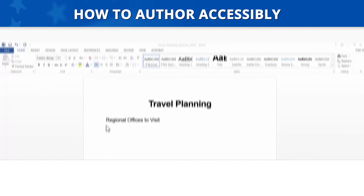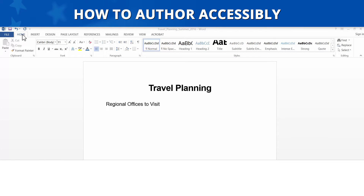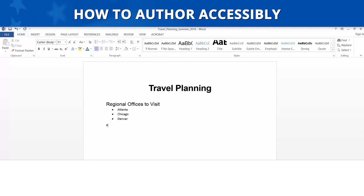How to Author Accessibly. To author accessibly, go to the Home tab in the Navigation Ribbon and in the Paragraphs section use the Bullets, Numbering, or Multi-Level Lists feature when making lists in your document. One way to use the built-in list feature is to select the list option you would like to use from the Navigation Ribbon and then begin typing your list. Another way is to type the first item of your list and then click on the button for the type of list you would like to use from the Navigation Ribbon.